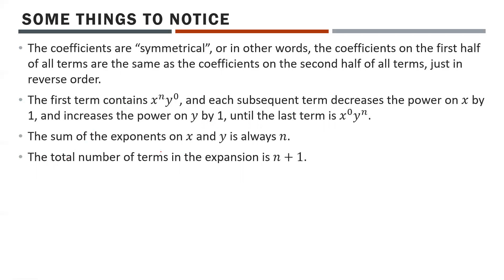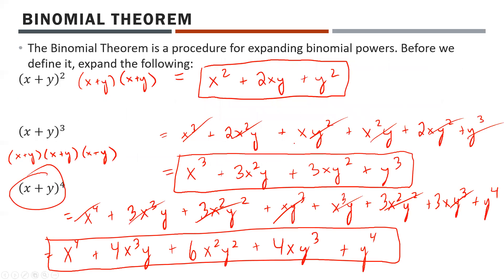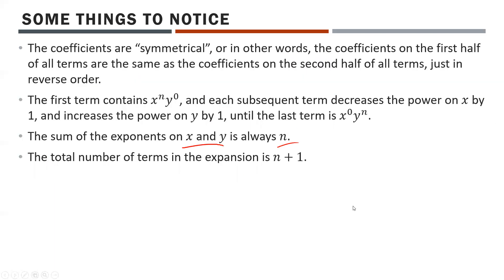Something more important to notice: the sum of the exponents on x and y is always n. Going back to check: with n=4, the first term has x⁴ (power 4, no y), then 3+1=4, then 2+2=4, then 1+3=4, and finally just y⁴. It's a rule that seems to work.